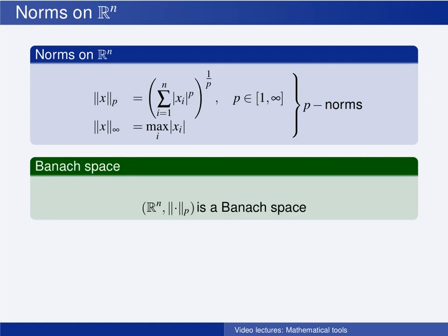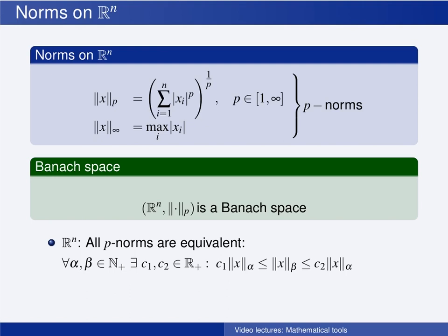The set of all n-dimensional vectors thus has several different norms defined on it, and the set together with any of these norms constitutes a Banach space. Often we choose to use the Euclidean metric and the Euclidean norm, but sometimes it is easier to solve a problem — for instance, prove a stability result — using another norm. And there is a nice feature to notice about the p-norms: all these norms are equivalent.